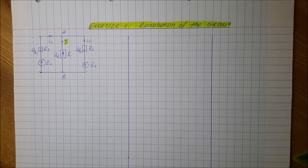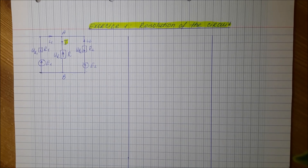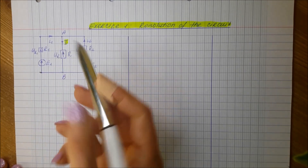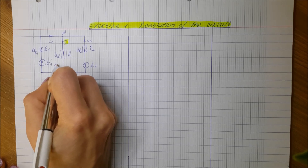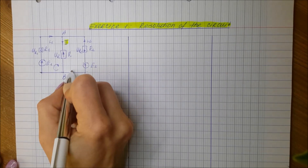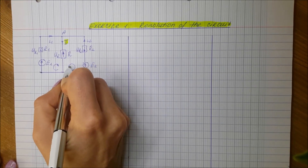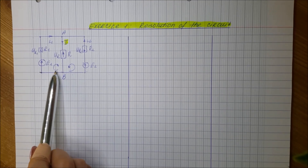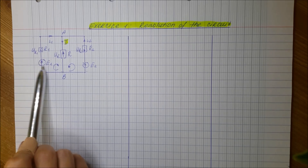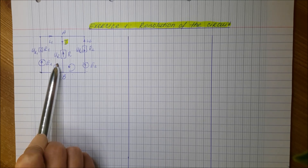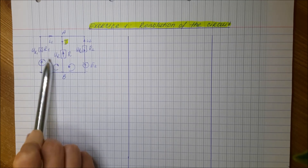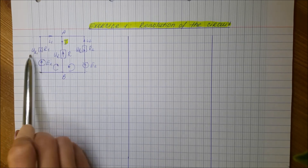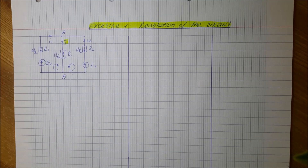At the third step, for each closed loop we will choose an arbitrary bypass direction. For example, for this closed loop I will choose a bypass direction going this way, and for the other closed loop I will choose the opposite direction. When applying the voltage law, all voltage arrows which follow the arbitrary bypass direction will be considered positive, and all voltage arrows which oppose the bypass direction will be considered negative.